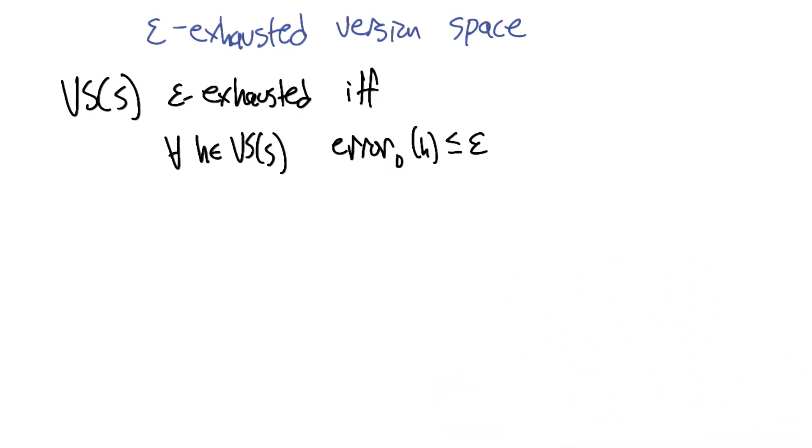So I guess if I was trying to put this in English, just to make sure that I understand it. What you're saying is, a version space is epsilon exhausted exactly in the case when everything that you might possibly choose has an error less than epsilon.